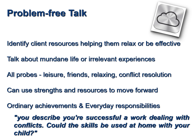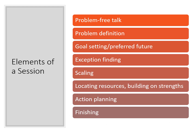My personal framework for running an SFBT session starts with problem-free talk, then defining the problem and best hopes for the sessions. Then goal setting with the preferred future using the miracle question, exception finding, scaling, locating resources by building on strengths and identifying who can help, making an action plan, and finishing. For the first session: problem-free talk, best hopes, exceptions, the miracle question, and 'what would life be like without the problem?'